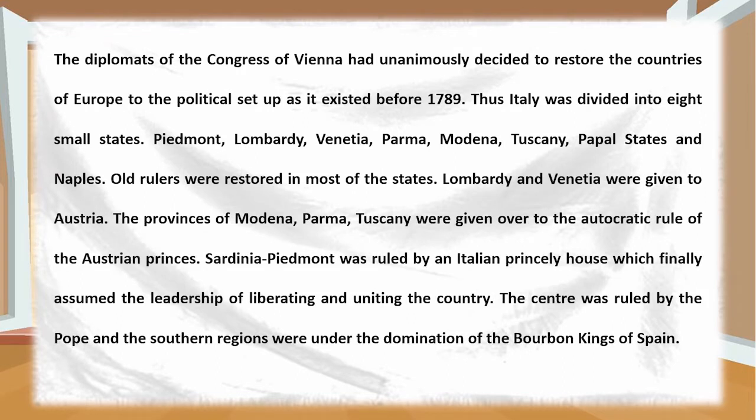All rulers were restored in most of the states. Lombardy and Venetia were given to Austria. The provinces of Modena, Parma, and Tuscany were given over to the autocratic rule of the Austrian princes. Sardinia-Piedmont was ruled by an Italian princely house, which finally assumed the leadership of liberating and uniting the country. The center was ruled by the Pope, and the southern regions were under the domination of the Bourbon kings of Spain.